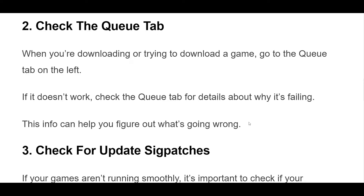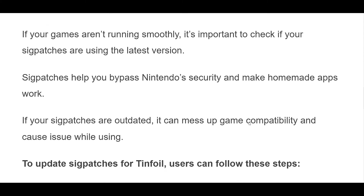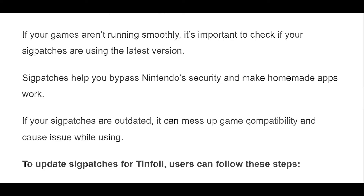2. When you're downloading or trying to download a game, go to the Q tab on the left. If it doesn't work, check the Q tab for details about why it's failing. This info can help you figure out what's going wrong.